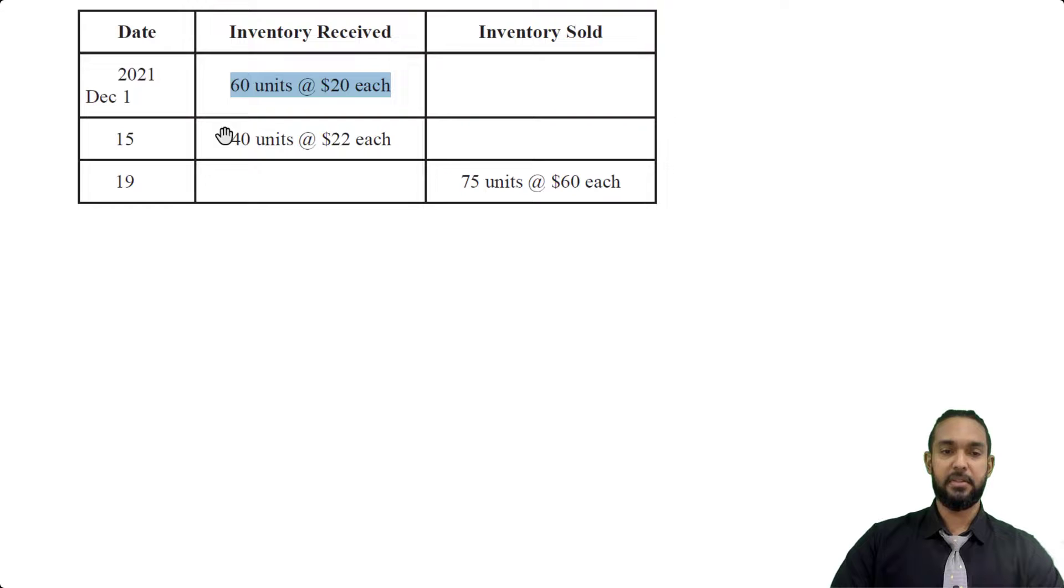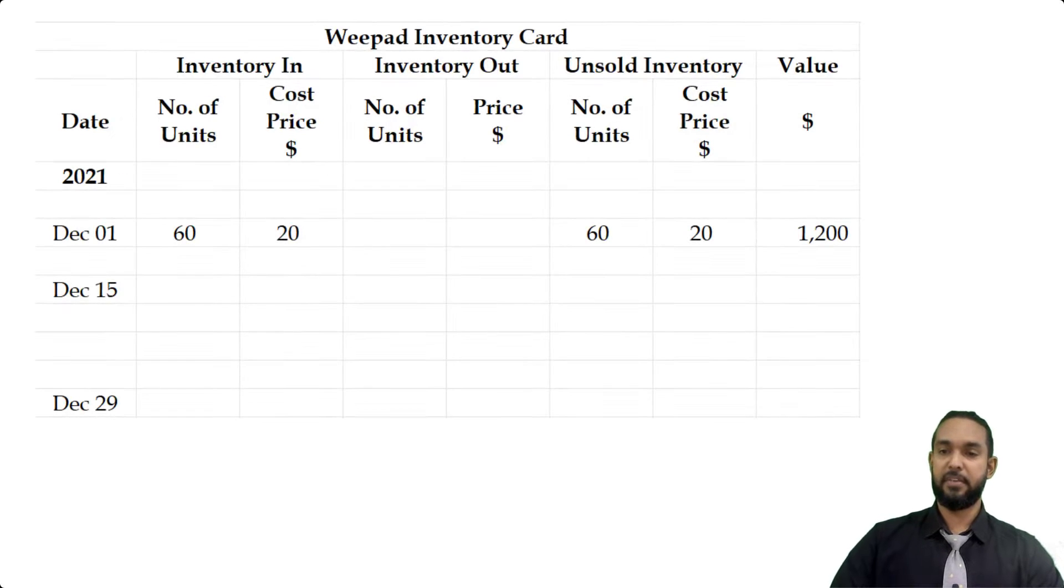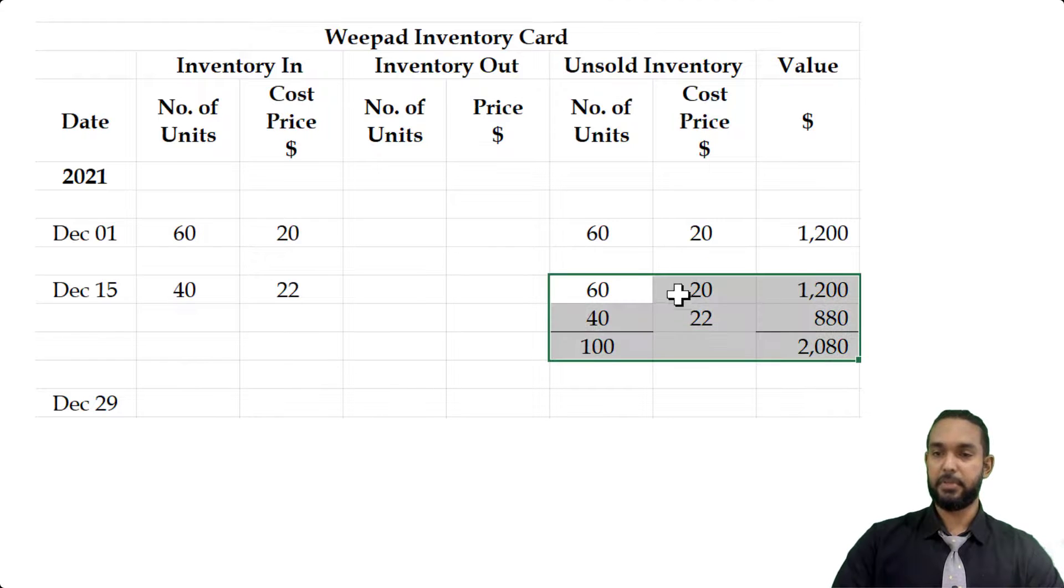Now on the 15th, we bought 40 more units at $22 each. So we're going to fill in information in here as well. 40 at 22. Now we're actually going to bring it across here and populate this last set of columns here. So the 60 at 20 from December the 1st is brought down. And the 40 at 22 that we just bought is also included now in our unsold inventory or closing inventory. So in all, we have 100 units, 60 plus 40, at a total value of $2,080, which is the 1200 plus 880.